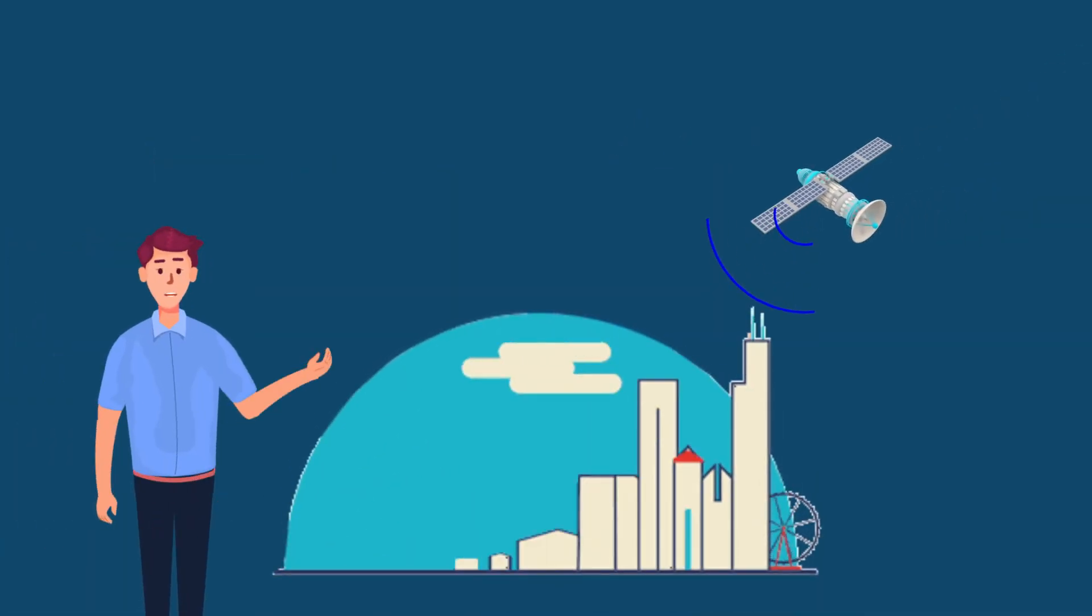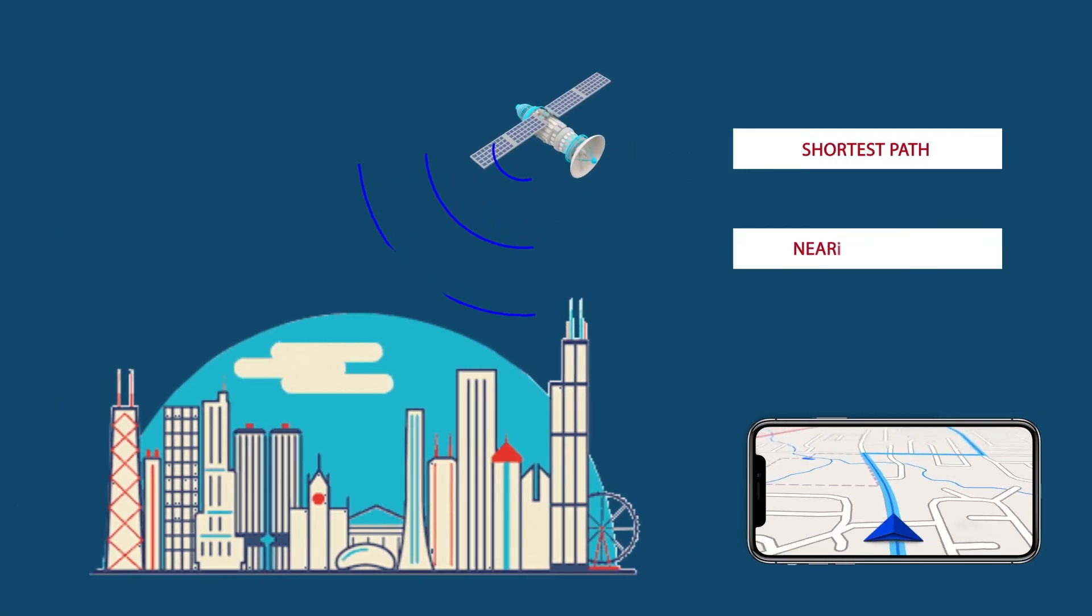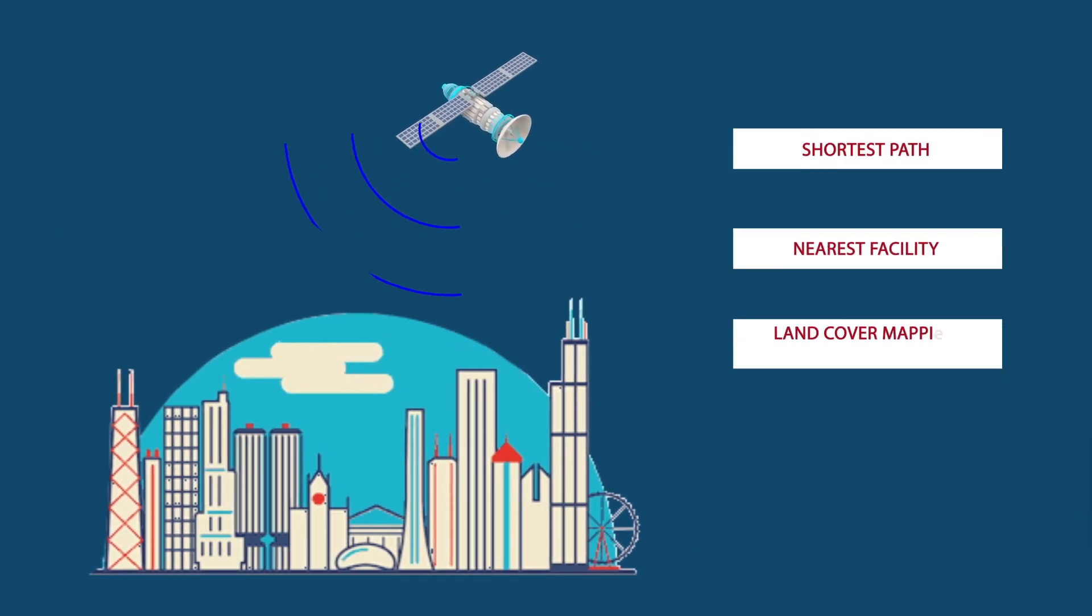Different kinds of analysis can be performed over GIS data, like finding the shortest path, nearest facility, and land cover mapping and prediction.